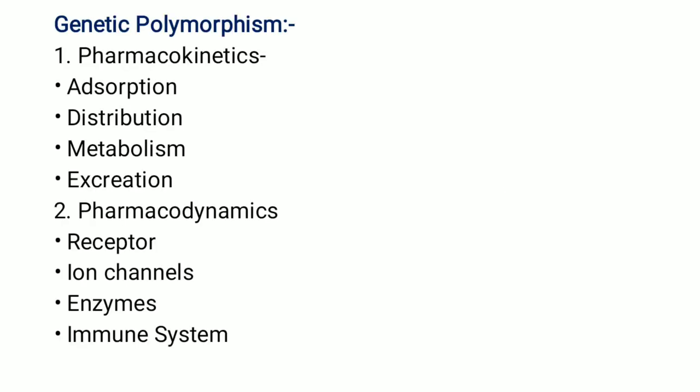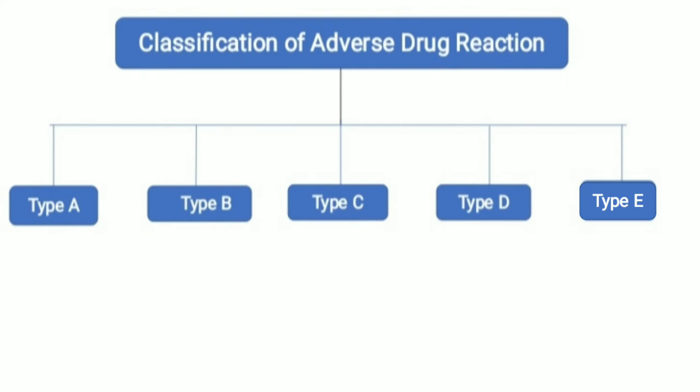Genetic polymorphism is classified into pharmacokinetics and pharmacodynamics. Pharmacokinetics is classified as absorption, distribution, metabolism, and excretion. Pharmacodynamics includes receptors, ion channels, enzymes, and the human system.